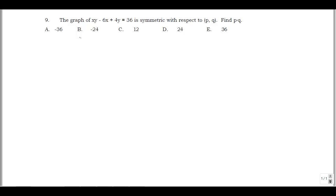This is problem 9 from the 2015 Spring ARML Student Math League contest. The graph of xy minus 6x plus 4y equals 36 is symmetric with respect to point (p, q). We want to find p times q.